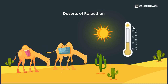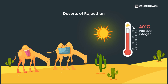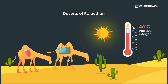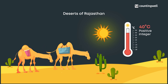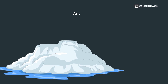Let's check the temperature — it is 40 degrees. Did you notice the temperature is represented using a positive integer? Even though 40 is a positive integer, we usually don't say "positive" or write the plus sign. Our next stop is Antarctica.